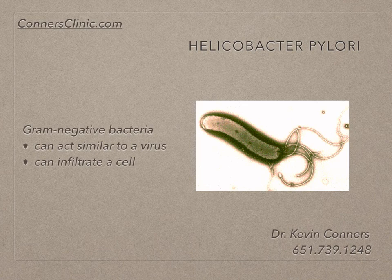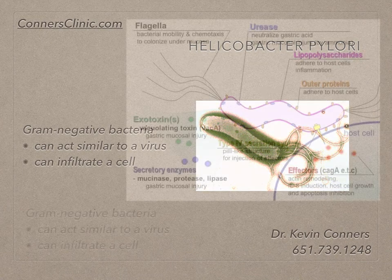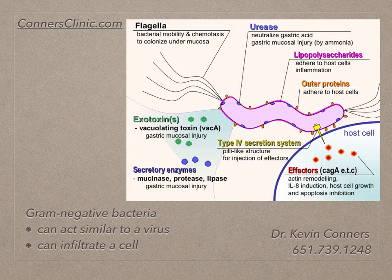Some of the gram-negative bacteria — H. pylori, but also Lyme disease, the Borrelia bacteria — are also in the gram-negative bacteria family. The reason why Lyme disease is so horrible is that it has the ability to go inside the cell and hide so that an antibiotic can't kill it after a certain stage. That's what makes H. pylori so sneaky and so bad.